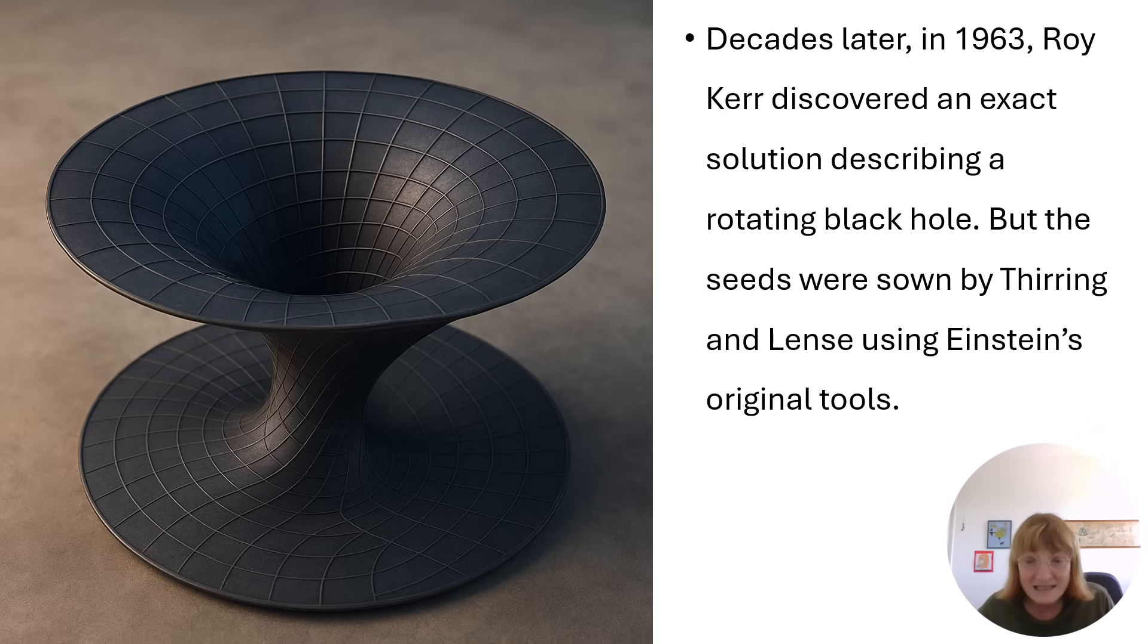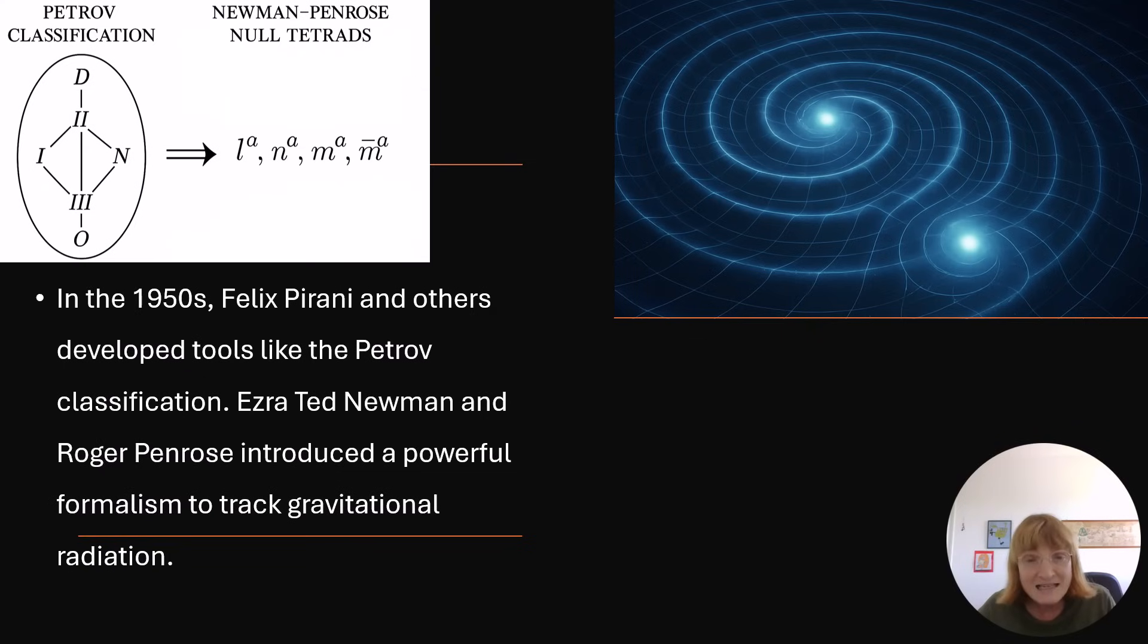Decades later, in 1963, Roy Kerr discovered an exact solution describing a rotating black hole, but the seeds were sown by Thirring and Lense using Einstein's original tools. In the 1950s, Felix Pirani and others developed tools like the Petrov classification. Ezra Ted Newman and Roger Penrose introduced a powerful formalism to track gravitational radiation.